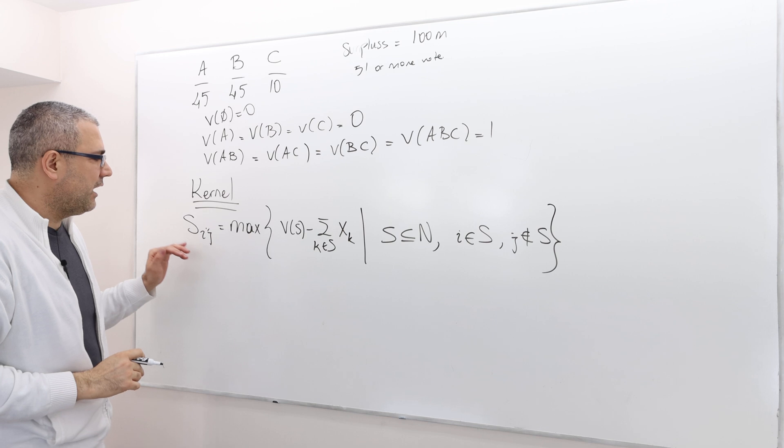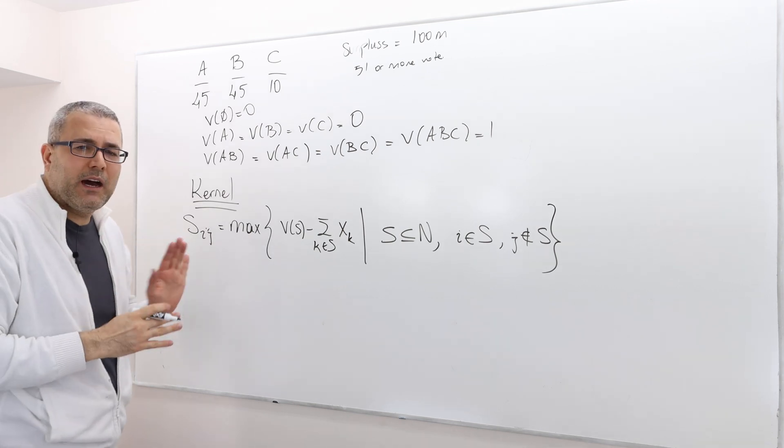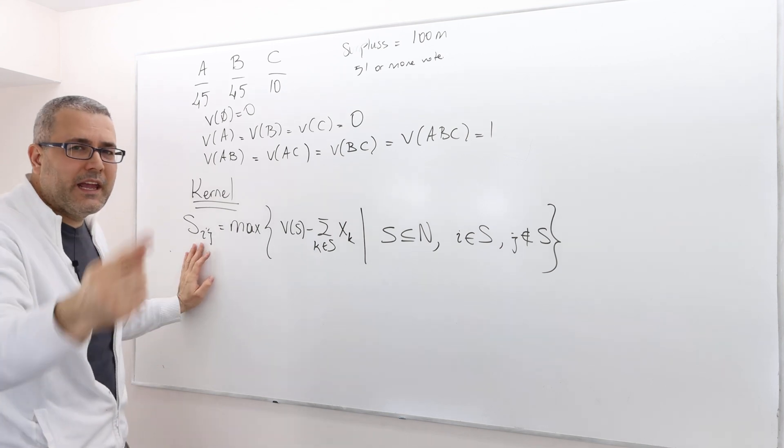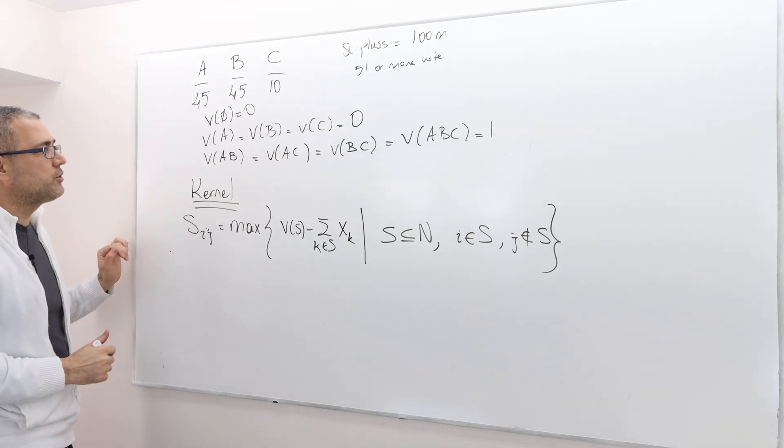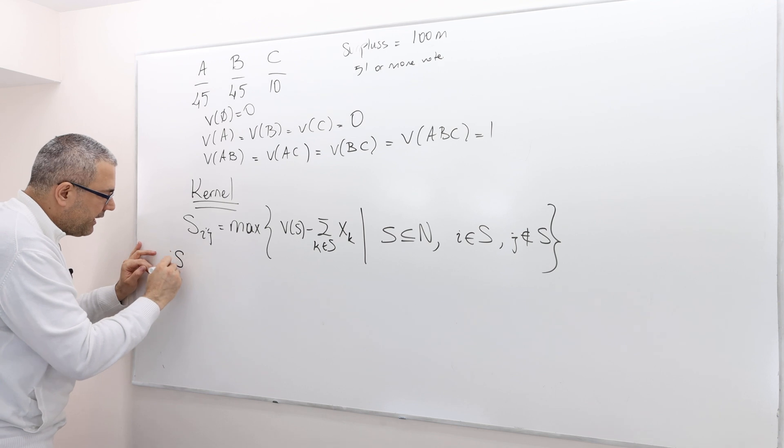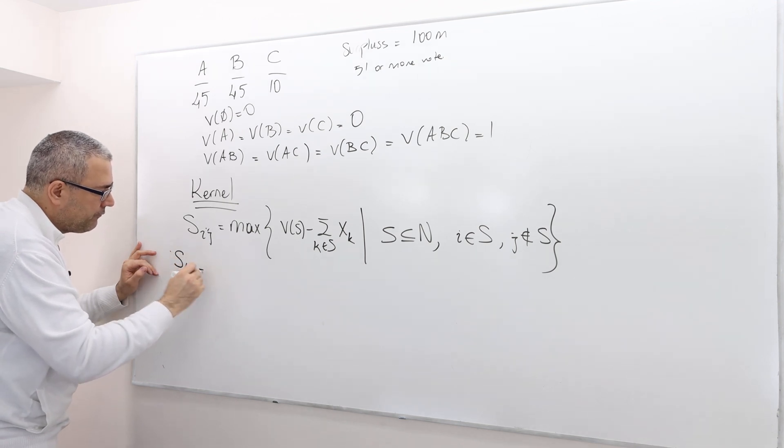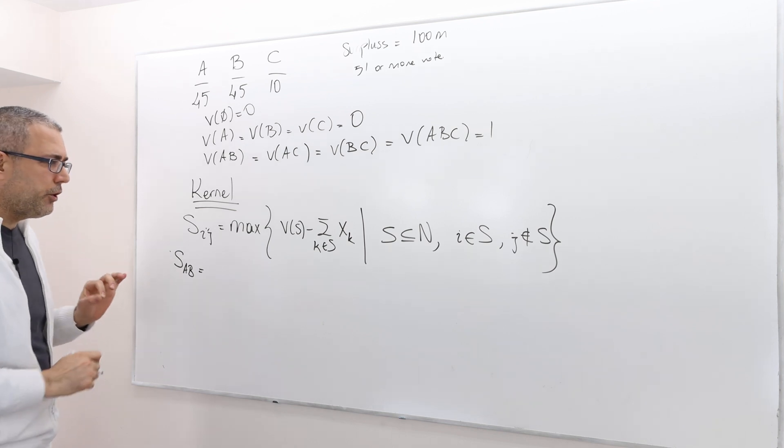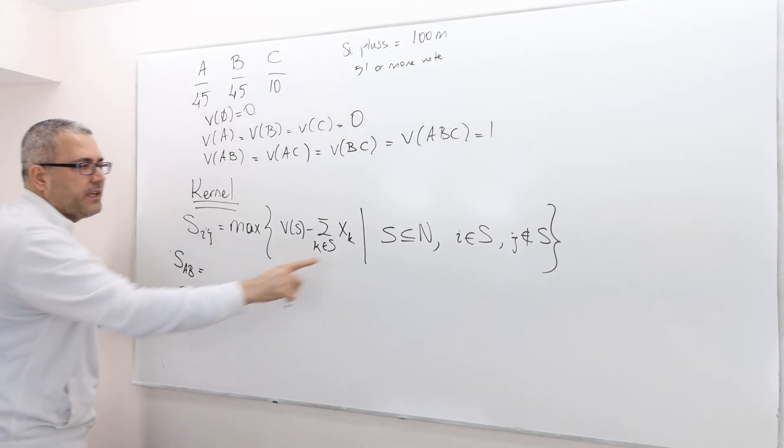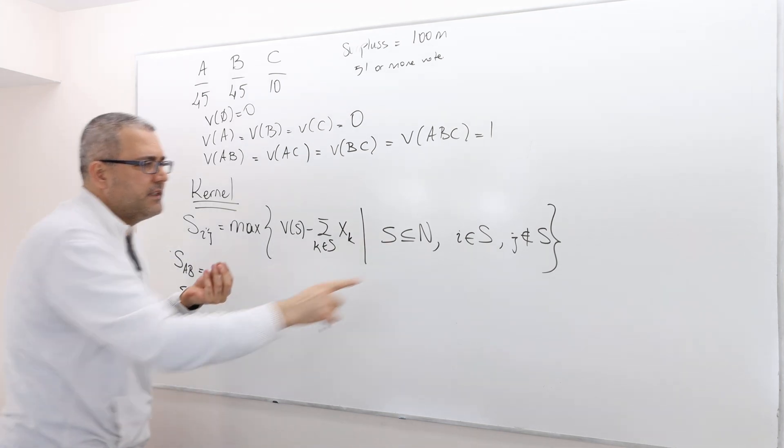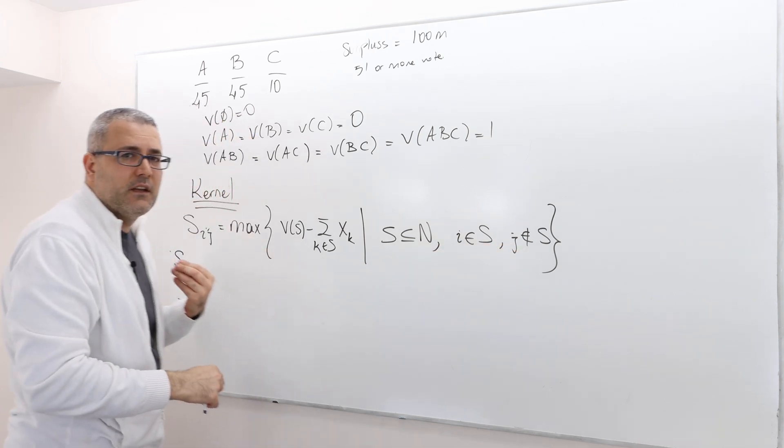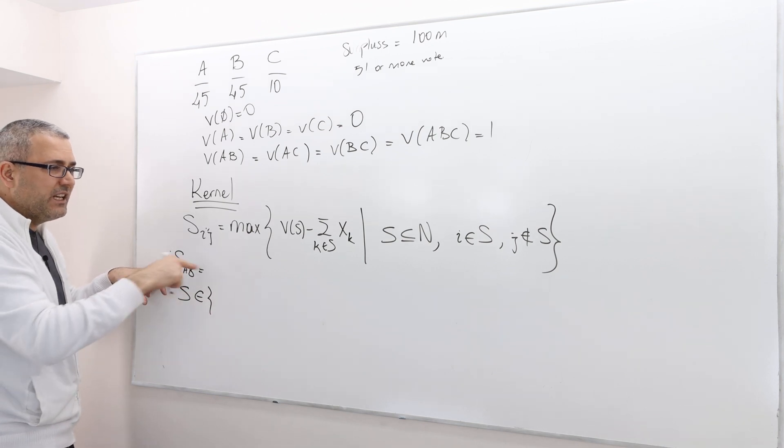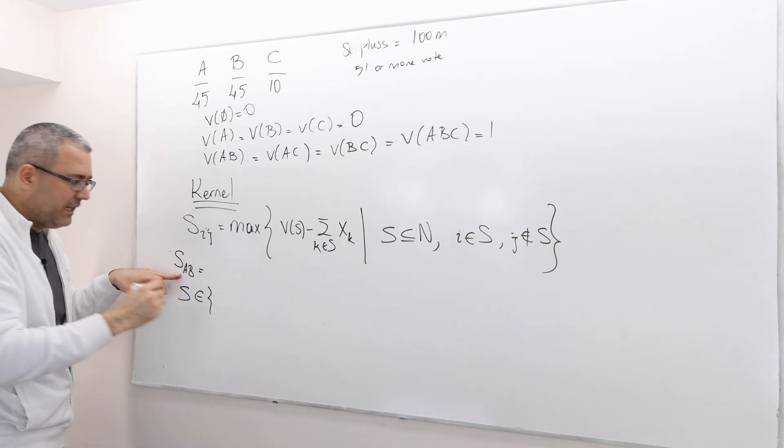This is exactly how we calculate the bargaining power of player i against player j. So here, let's calculate SAB. So first, let's determine what are those subsets S where i is in S and j is not. Well, those S's where A is in but B is not - the coalition A itself, obviously, and coalition AC. That's it, because all the other coalitions have B in it.